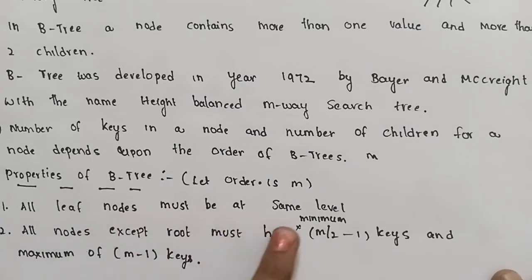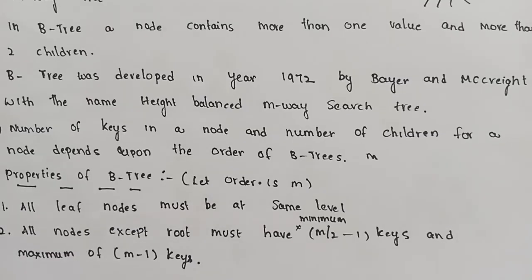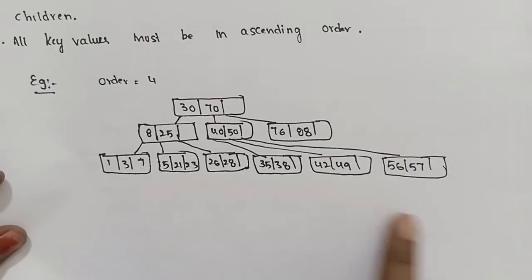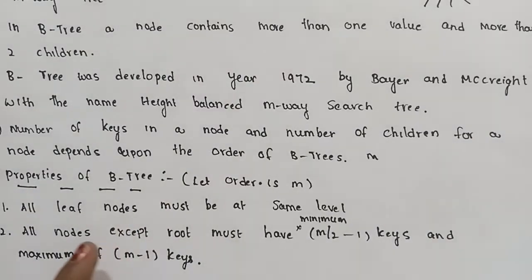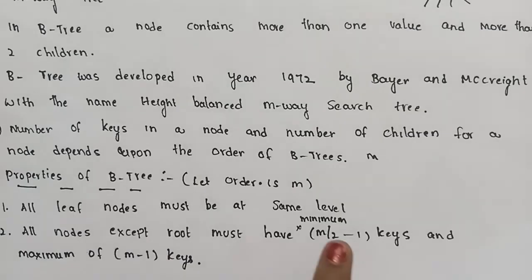This is the first property of the B-tree: all leaf nodes must be at the same level.